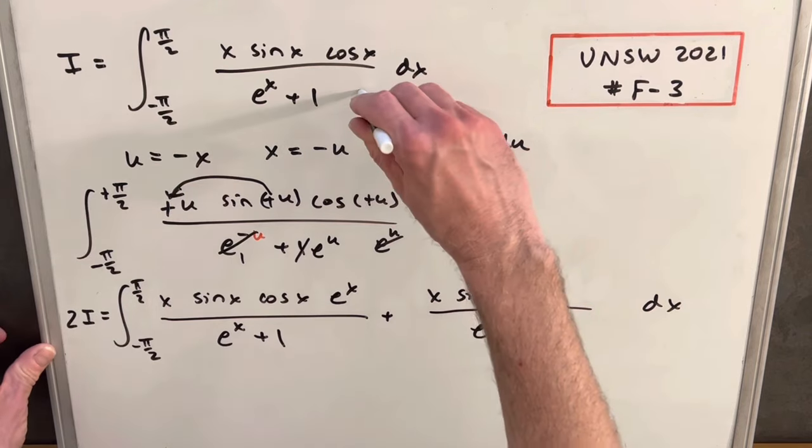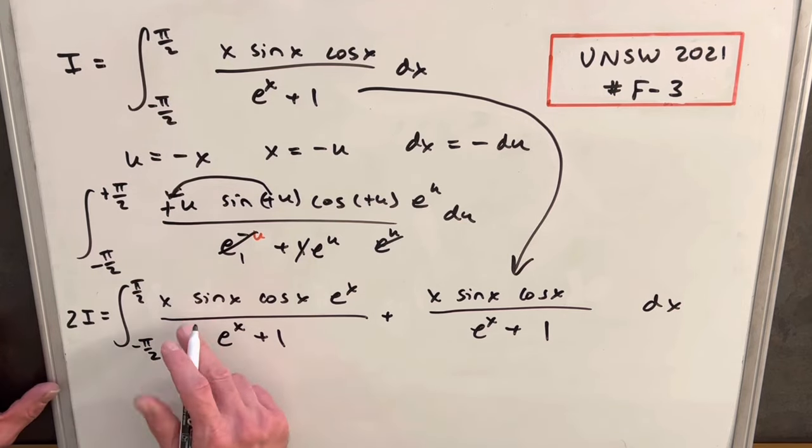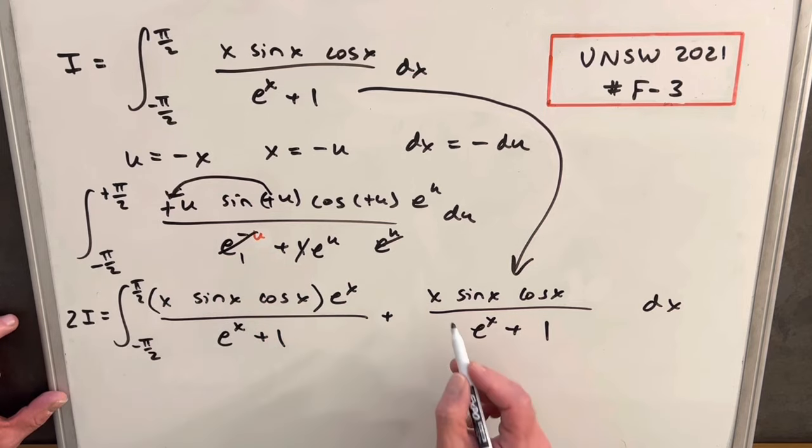All I've done here is I've taken this integral and just brought it down here and added it. And now we have our two copies of the integral. Now you notice we have the same denominator, so let's just add these together. We have this term in common here.